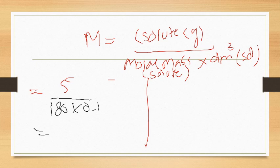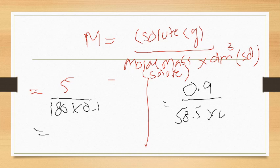For NaCl, the amount of solute was 0.9 grams, the molar mass was 58.5 grams per mole, and volume was 0.1 decimeter cubes. The answer will be 0.28 M.